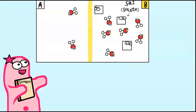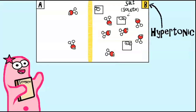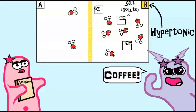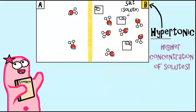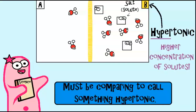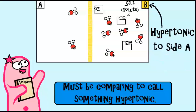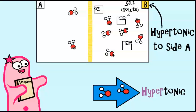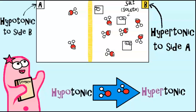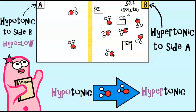Here's some vocabulary to know. We call side B hypertonic. The prefix 'hyper' helps me think of a high amount of something — in our case, a high solute concentration. But we can't just say something is hypertonic without comparing it to something else. We say that side B is hypertonic to side A because it has a greater solute concentration than side A. In osmosis, water moves to the hypertonic side. We say side A is hypotonic — 'hypo' rhymes with low, which helps remember that it's a lower solute concentration, at least when compared to side B.